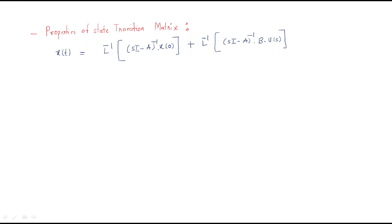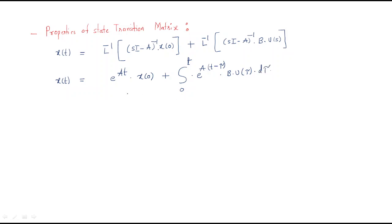When we convert this, x(t) becomes: applying the Laplace inverse, it becomes Laplace inverse of (sI minus A) whole inverse. We can directly write it as e^(At) times x(0). For the remaining term, it will become the integration from 0 to t of e^(A(t minus tau)) times B times u(tau) d(tau). The first part is the zero-input response because there is no input, and the second part — where there is no initial state — we call the zero-state response.